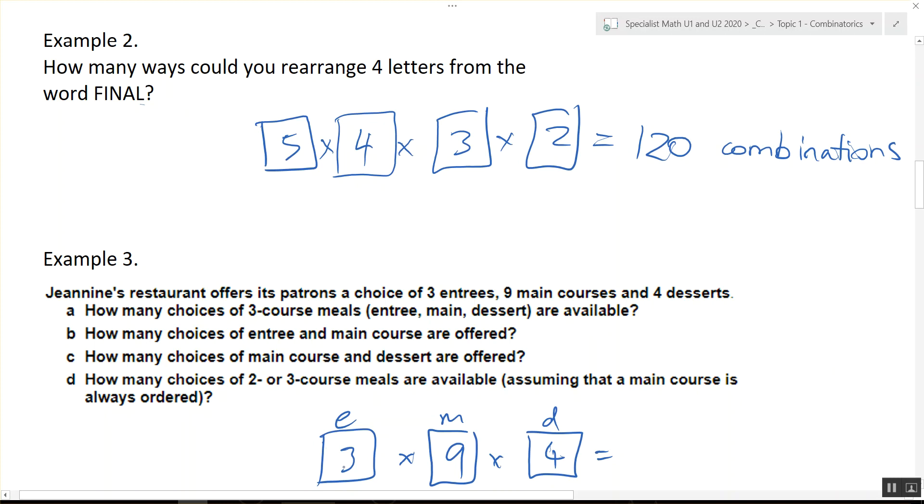So three times nine, 27. 27 times four? What is it? I'm really tired. Okay, so there's 108 three-course meals.